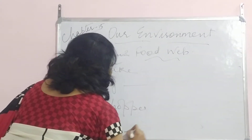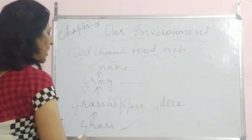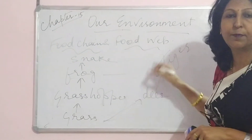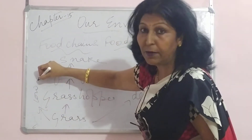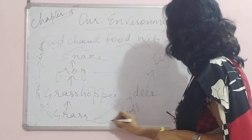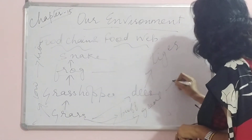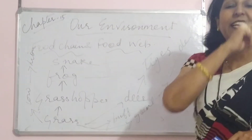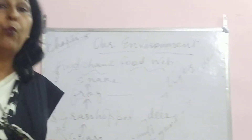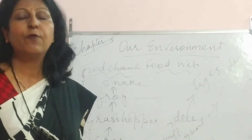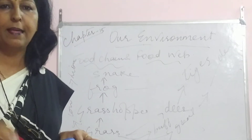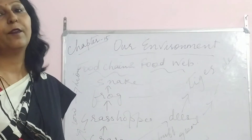Now I will show you the food web. This grass can also be eaten by deer, and this deer will be eaten by tiger. This grass can be eaten by a cow, which will be consumed by a lion or tiger. The grass can also be fed upon by buffalo, by goat, and so on — all ending with decomposers. So when at each trophic level you have many organisms, that is what makes a food web — a web of food chains.